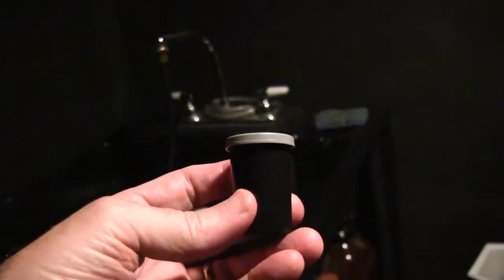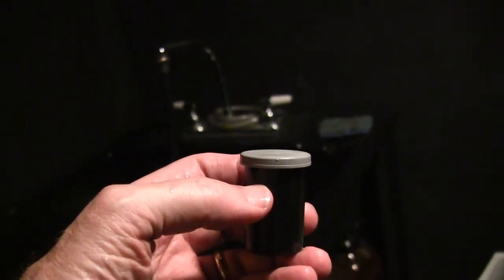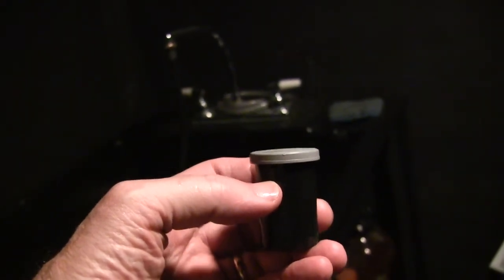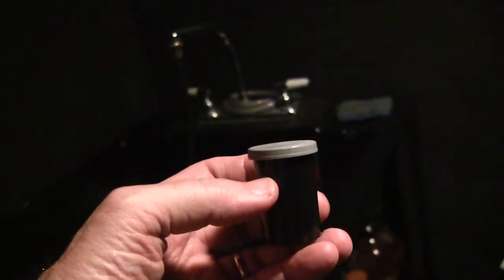I fill these film canisters with liquid light emulsion and leave a quarter inch space or so. That's 25 milliliters, leaving 5. The can holds 30 milliliters and I don't put anything else in it.